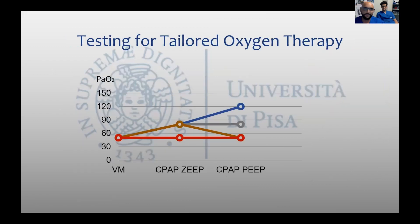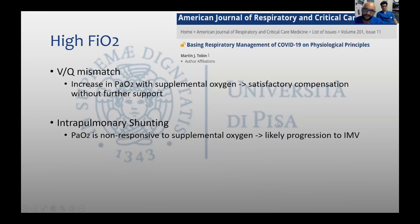This is what we did in Pisa, where we assessed oxygen therapy in COVID patients, testing FiO2, then flow, and then lung recruitment in a step-by-step approach. We know that rising PiO2 is probably useful in treating ventilation-perfusion mismatch, but it doesn't work if the patient has a moderate or severe shunt. So we have to assess which patients require only FiO2 compared to those who require more invasive ventilatory support.